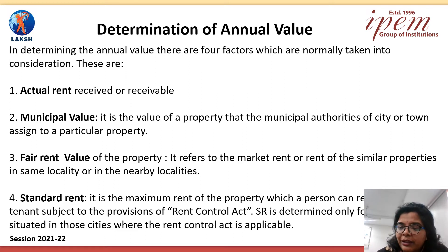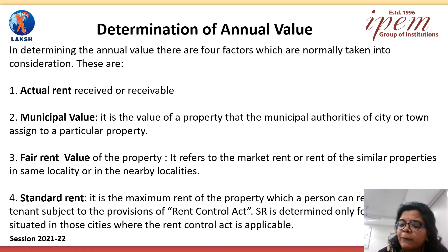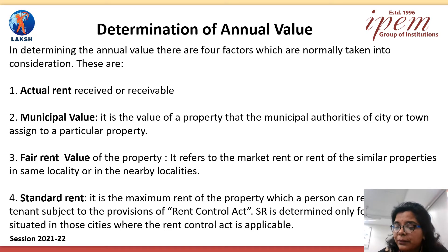To calculate annual value, we go through four main factors. First is actual rent received or receivable — whatever is the actual rent that building can earn or is earning. Second is municipal value — it is the value that the municipal authorities of a city or town assign to a particular property.